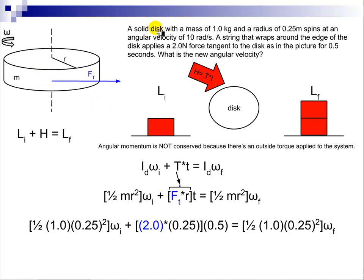A solid disk with a mass of 1.0 kg and a radius of 0.25m spins at an angular velocity of 10 rad/s. A string that wraps around the edge of the disk applies a 2.0N force tangent to the disk, as in the picture, for 0.5 seconds. What is the new angular velocity?